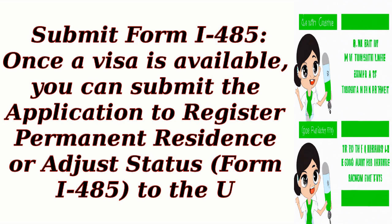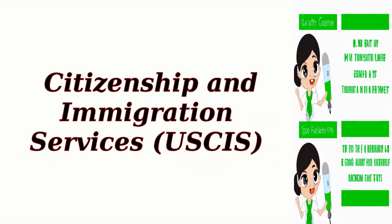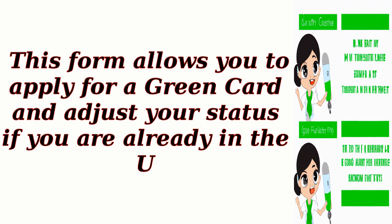Step 5: Submit Form I-485. Once a visa is available, you can submit the application to register permanent residence or adjust status, Form I-485, to the U.S. This form allows you to apply for a green card and adjust your status if you are already in the U.S.